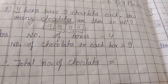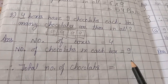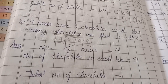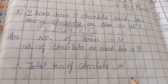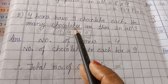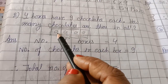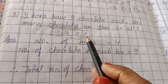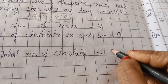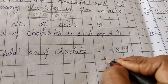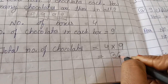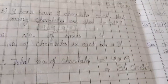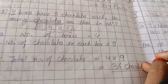You can see, children, that all multiplication word problems are similar — we are doing the same type of multiplication and writing the same type of statements each time, so it is very simple. The last statement is: total number of chocolates. Since 4 boxes have 9 chocolates each, we add 4 times 9. So we write 4 times 9, and 4 nines are 36. Therefore, total 36 chocolates are there in all 4 boxes.